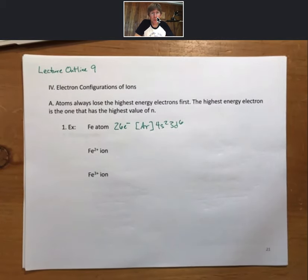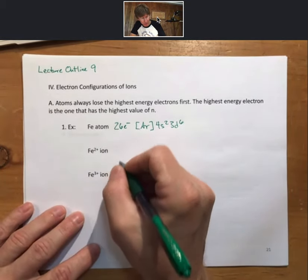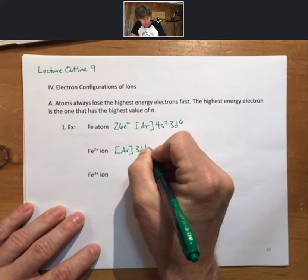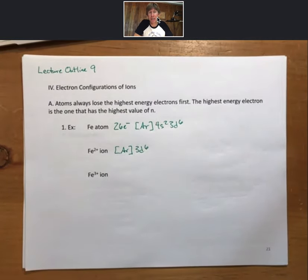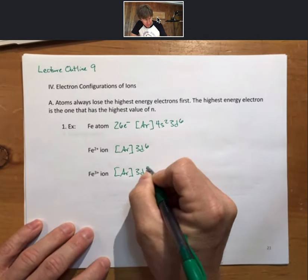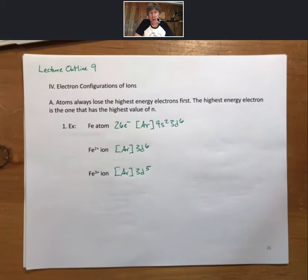As we go to the iron 2 ion, we lose two electrons. Those are the 4s2 electrons, and we're left with argon 3d6, and argon 3d5.